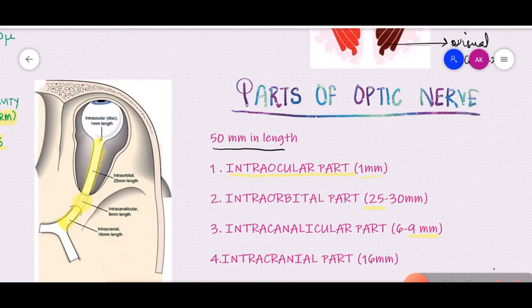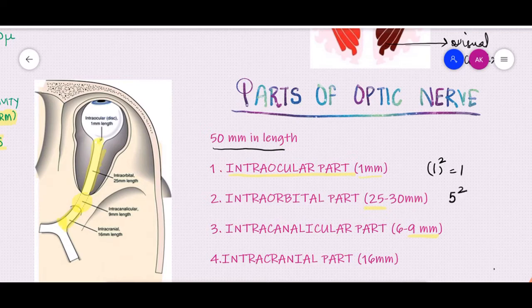Here is an easy way to remember these dimensions. The intraocular part is 1 mm — that is 1 squared. The intraorbital part is 25 mm — that is 5 squared. The intracanalicular part is 9 mm — that is 3 squared. And the intracranial part is 16 mm — that is 4 squared.